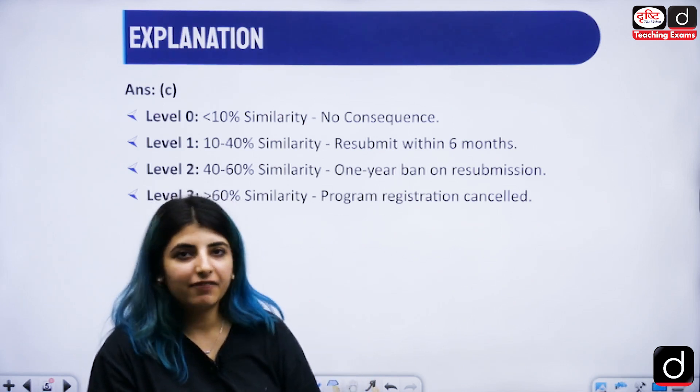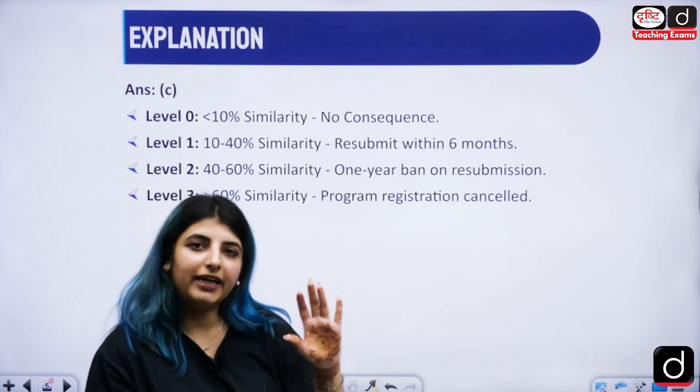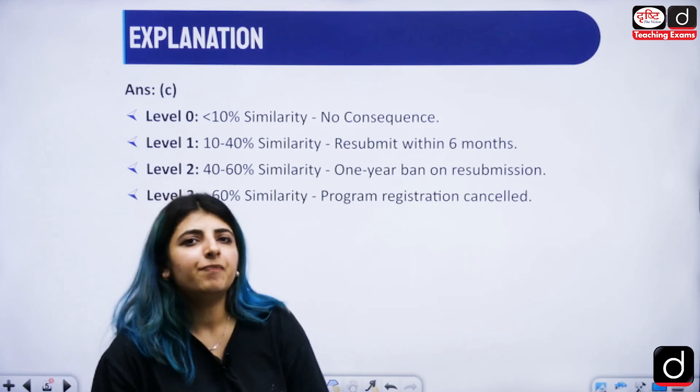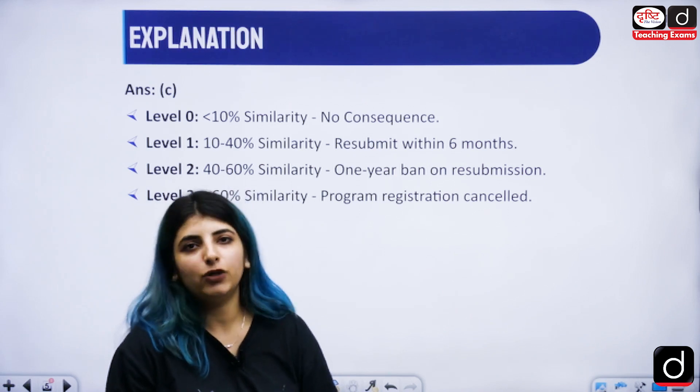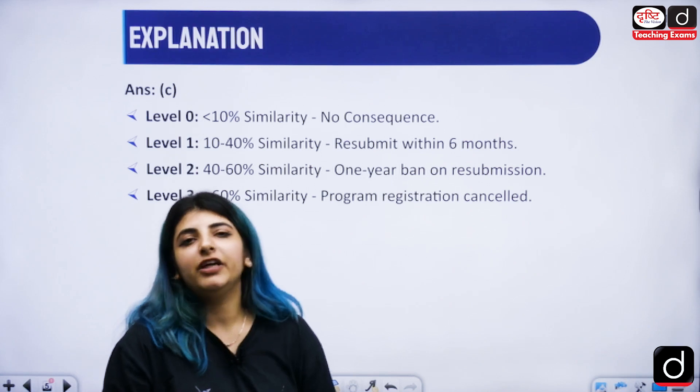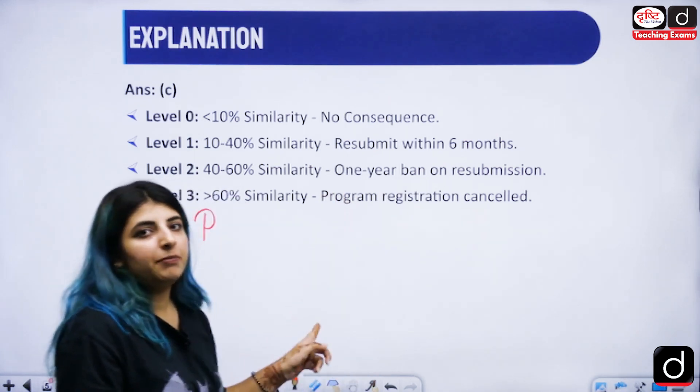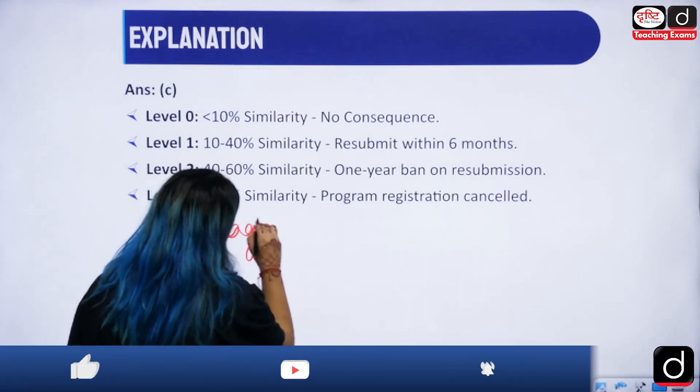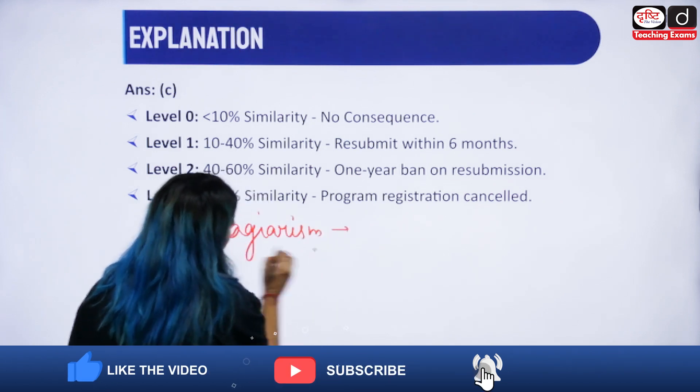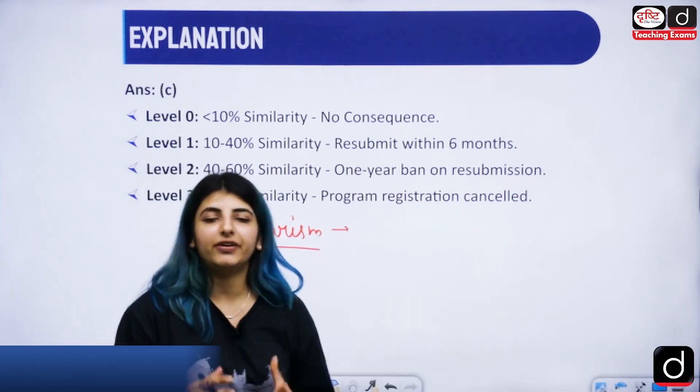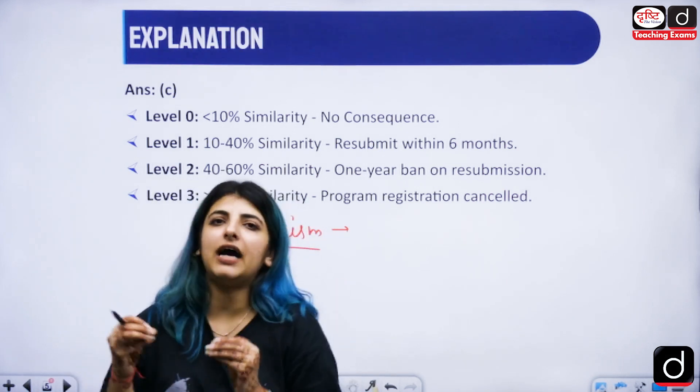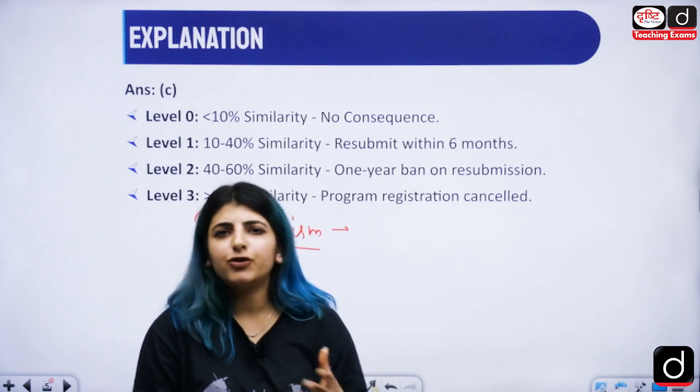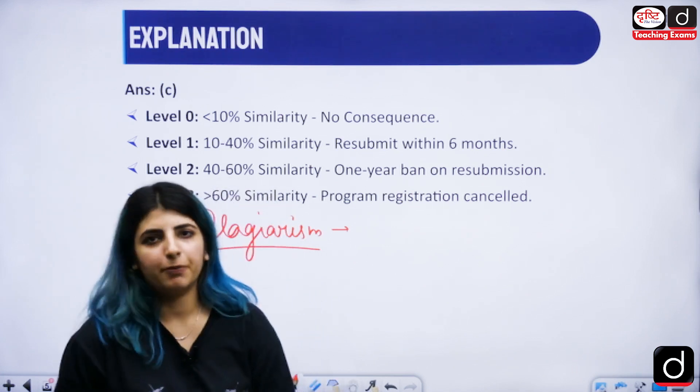When you sit for the PhD viva, your paper, thesis and dissertation will undergo a plagiarism check. During that plagiarism check it turns out that you have copied the content, you have not cited the content from the paper you have read, that is going to lead you into much trouble depending on the percentage from these particular levels.